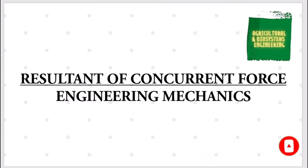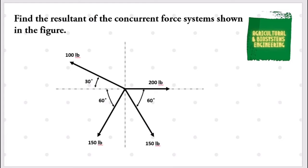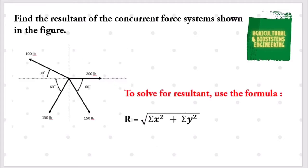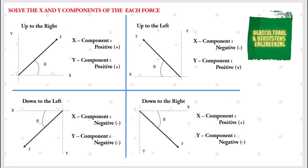I will show you how to solve this problem: find the resultant of the concurrent force systems shown in the figure. To solve for the resultant, we will use the formula: resultant R is equal to the square root of the sum of the squares of the summation of the x and y components. We have four forces: 100 pounds, 200 pounds, 150 pounds, and another 150 pounds. We will get the x and y components of each.